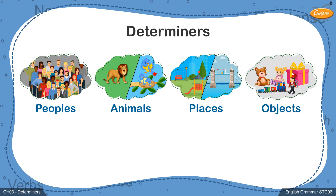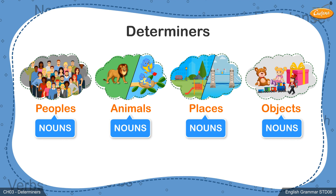These words representing people, animals, places and objects are called nouns. We also talk about specific nouns at times and use words which help us make it clear what the noun is or refers to.